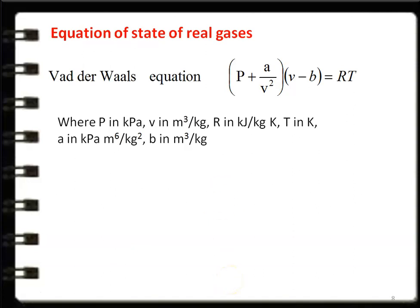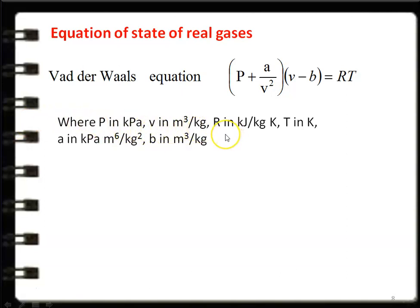Real gases deviate from ideal gas behavior. The important equation of state for real gases is the Van der Waals equation: (P + a/V²)(V − b) = RT, where P is pressure in kPa, V is specific volume in m³/kg, R is the gas constant in kJ/kg·K, T is temperature in Kelvin, a is in kPa·m⁶/kg², and b is in m³/kg.